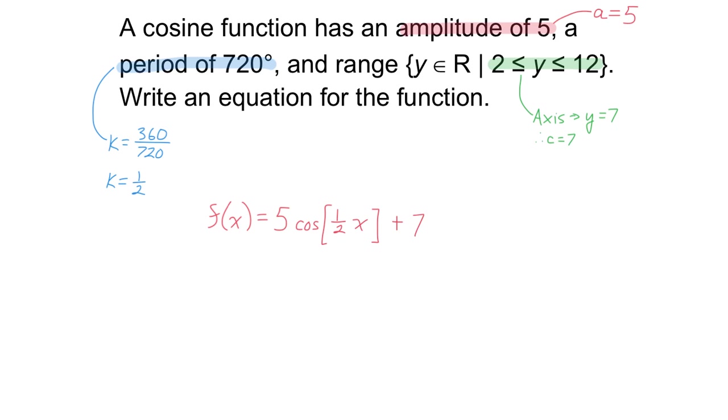The amplitude is 5, which means our a value is 5. It's a cosine function. The period is 720, so 360 divided by 720 is a half. You could have put 0.5 there, that's fine as well. The range, well, I see the minimum is 2, the maximum is 12. Halfway between that would be 7. That would be the central axis. So if the central axis is 7, then c equals 7.